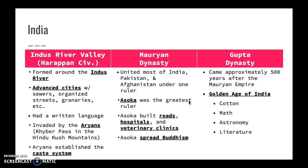The three main empires in India to know are the Indus River Valley civilization, the Mauryan Dynasty, and the Gupta Dynasty. The Indus River Valley — also known as the Harappan civilization — formed around the Indus River. They built cities with advanced features like sewers, streets, and granaries, and had the written language of Sanskrit. They were invaded by the Aryans, who established the caste system — if you were high up in the caste system, you were an Aryan. The Mauryan Empire united India, Pakistan, and Afghanistan under one ruler. Ashoka was the greatest ruler and spread Buddhism via missionaries throughout Asia. He built roads, hospitals, and veterinary clinics, bringing India to its golden age. The Gupta Dynasty followed and saw major academic achievements including the development of cotton, math, the concept of zero, astronomy, and literature.